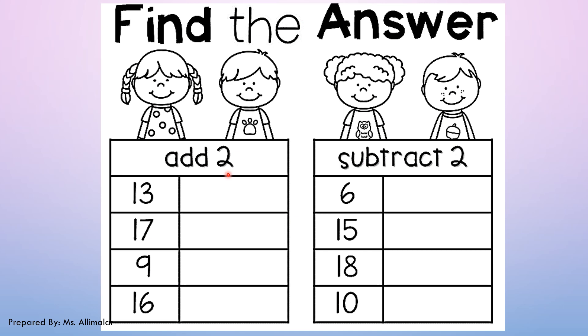13 plus 2 is? 13, 14, 15. So you will write 15 here. Okay? Now next number is 17. You add 2. Add 2 means plus 2. 17 plus 2. 17 plus 2? 17, 18, 19. So you will write here.